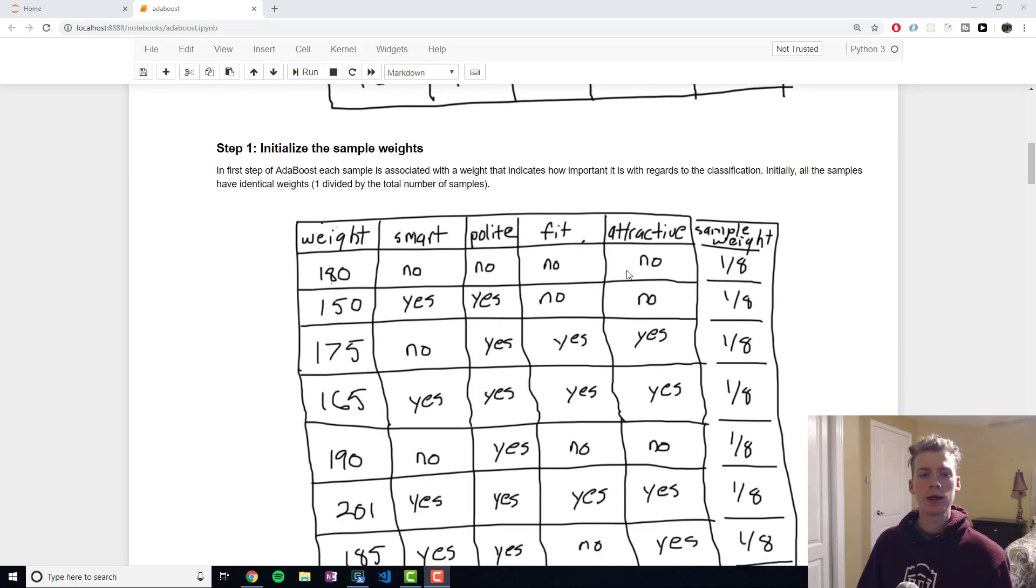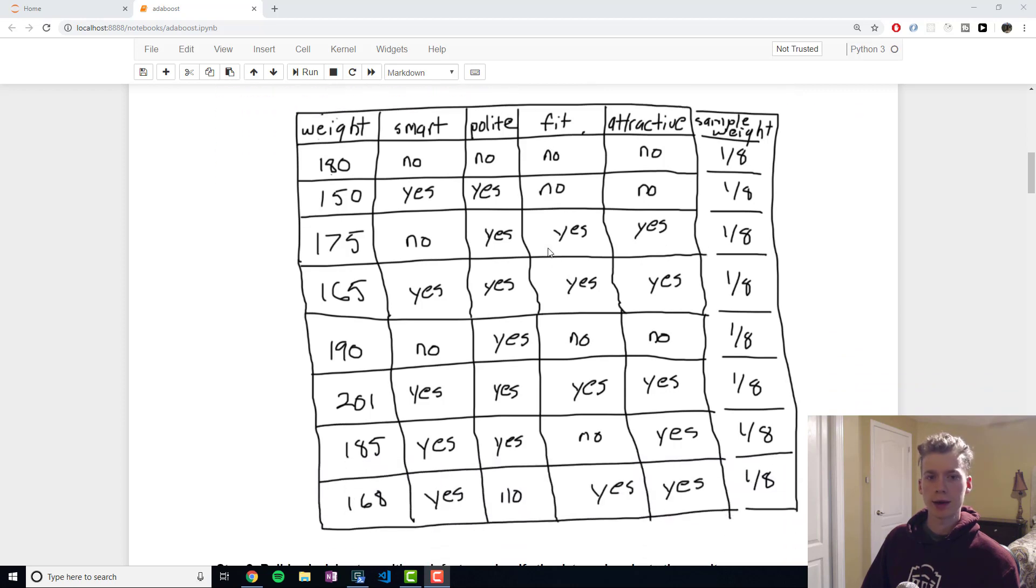The first step in AdaBoost is to initialize the weights. Initially all the weights are going to be identical, and the way to calculate that is you just take the number of samples and then you divide one by that. We have eight samples here, so we divide one by eight.